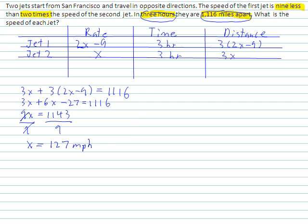So we just solved for x, which we know is the rate of jet 2. So now we can say jet 2 equals 127 miles per hour.